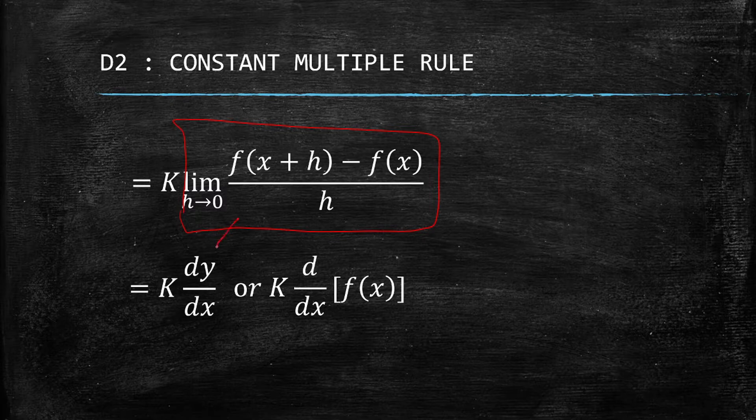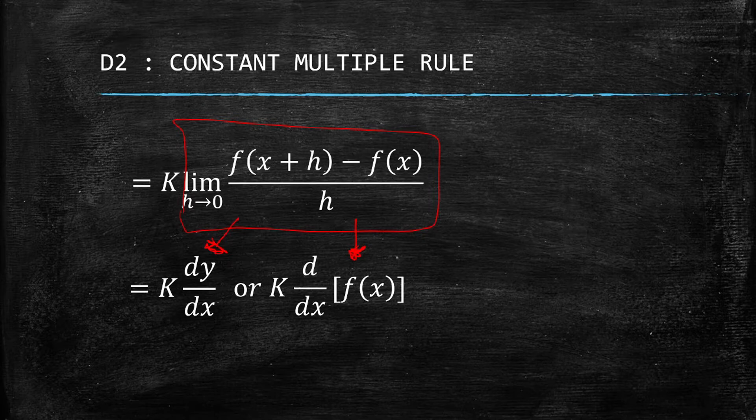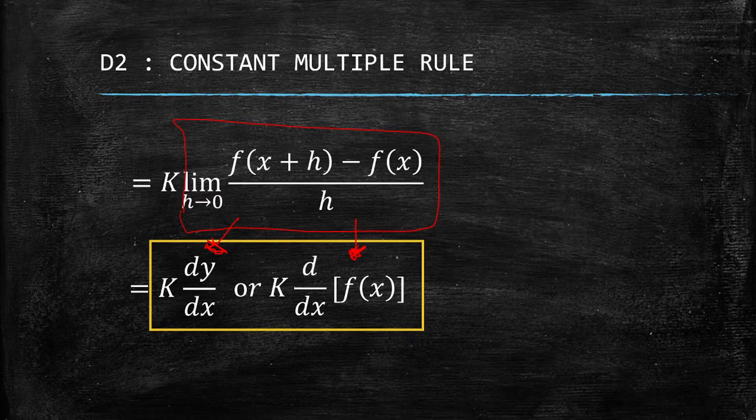We can rewrite this definition of the derivative into this: either we have K times dy/dx, or in function notation, we have K times the derivative of f(x). We have proven the Constant Multiple Rule.